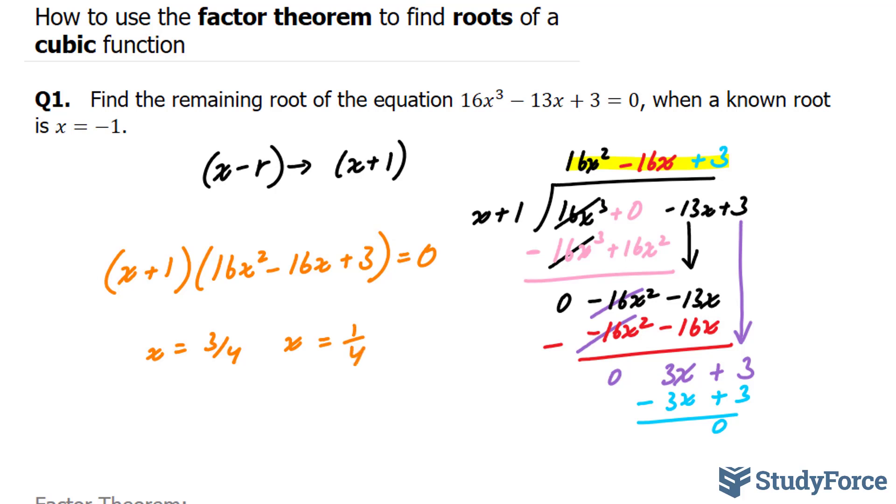So to write this as a factor, we have (x + 1)(x - 3/4)(x - 1/4). Our two roots that we're looking for is this one and this one.